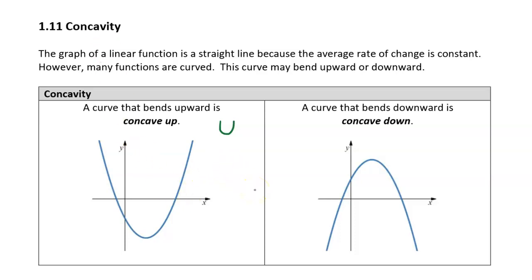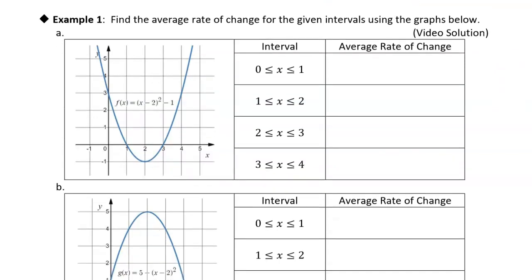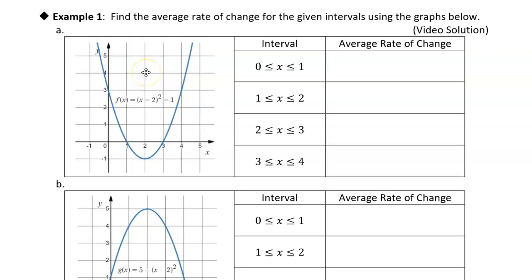That's how we describe the curvature of a function. In this first example, we're going to look at the rate of change of these different types of curvatures. We've got one function that's concave up and one that's concave down. If the average rate of change is constant, it's linear; if not constant, it's nonlinear. I'll abbreviate concave up as CC with an upward arrow.